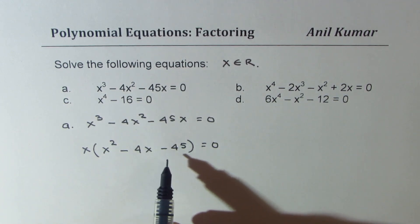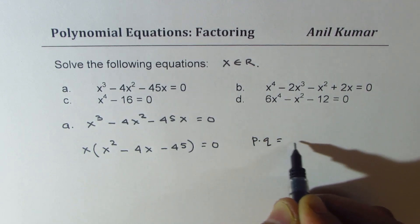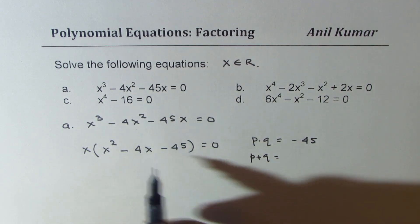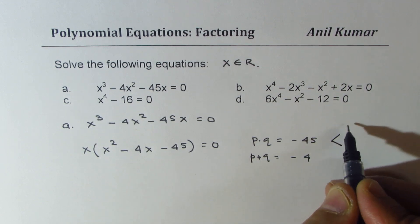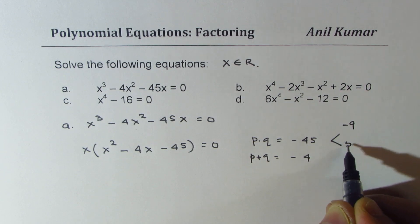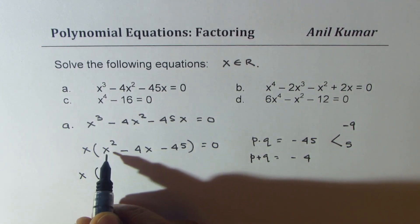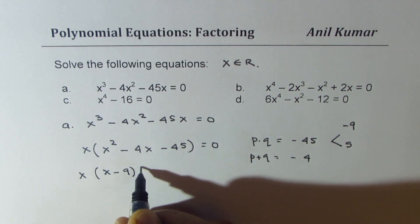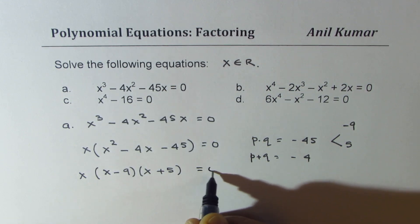Applying sum and product, we are looking for product of two numbers to be minus 45, and sum of two numbers as minus 4. So the numbers could be 9 and 5. We could use minus 9 and 5. So the factoring we get x minus 9 times x plus 5 equal to 0.